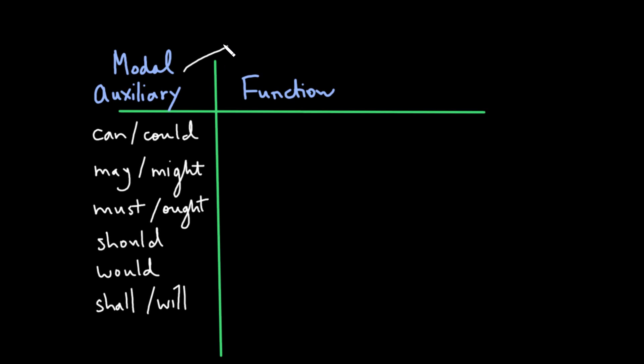A modal auxiliary is a kind of helping verb, and it's a very specific kind of helping verb. It's a helping verb that's often said to express the mood of the verb phrase, although mood is in some ways not the best word to describe this, because a lot of these modal auxiliaries really express a kind of condition or possibility, and sometimes it's better to say that a modal auxiliary expresses the mode or the manner of a particular verb phrase.